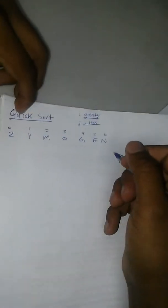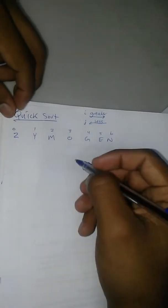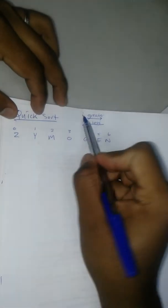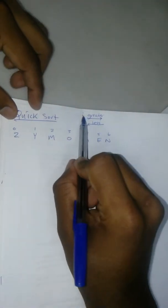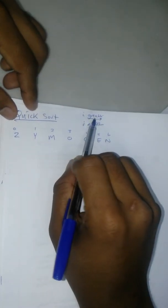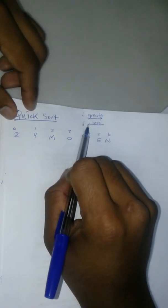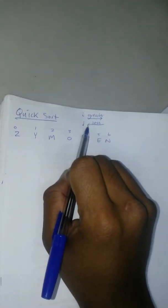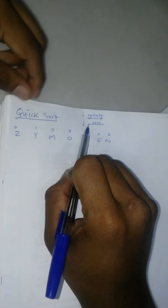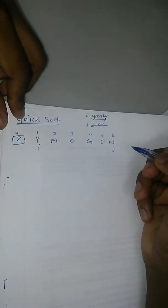Quick sort. When you're moving I towards the right, you're going to ask if I is greater than the pivot. When you're moving J towards the left, you're going to ask if J is less than the pivot. We're going to mark our pivot, put our I and our J where they belong.